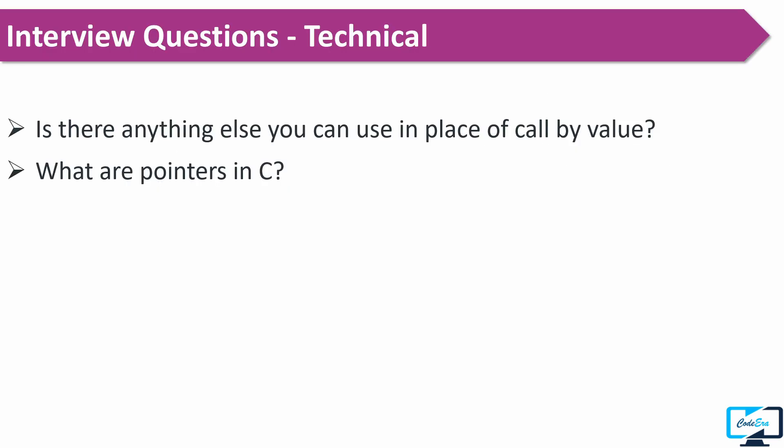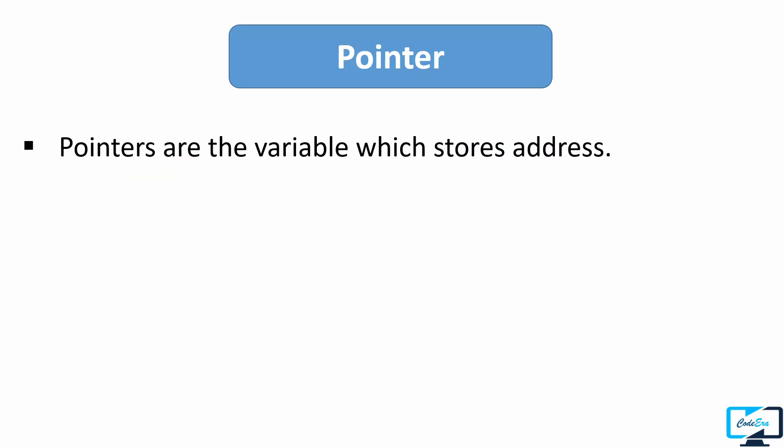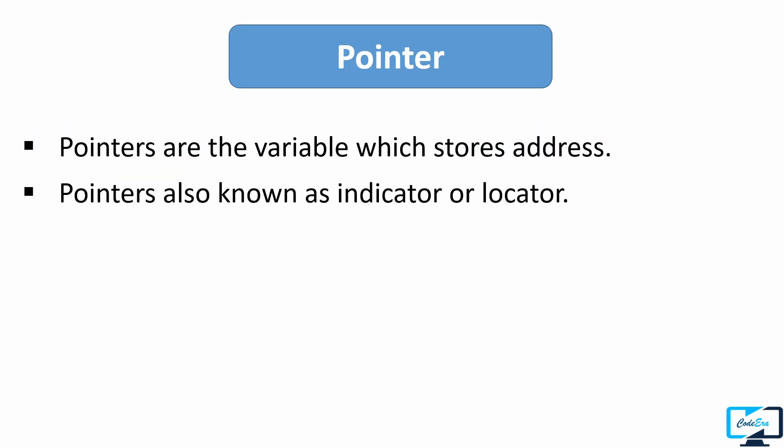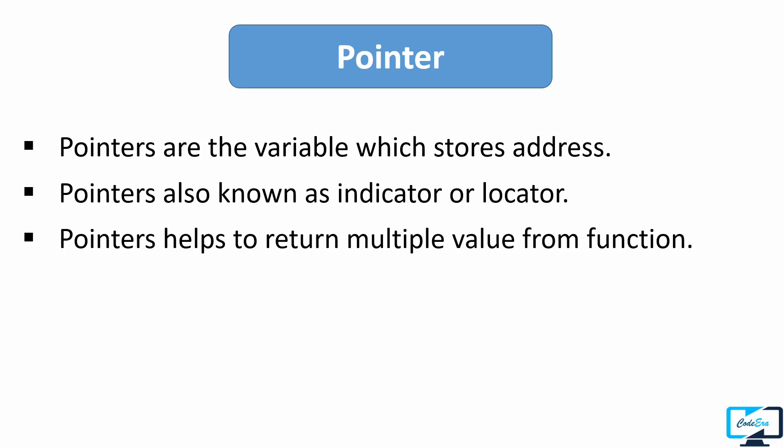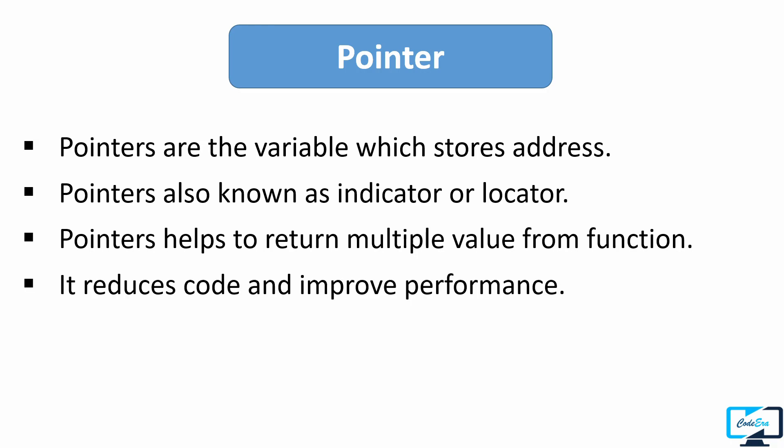The next question was what are pointers in C. Pointers are variables which store the address and are also known as indicators or locators. You can add advantages: pointers help to return multiple values from a function, help reduce code, and enhance application performance. You can also add use cases such as dynamic memory allocation.